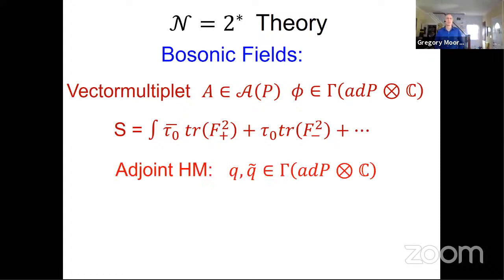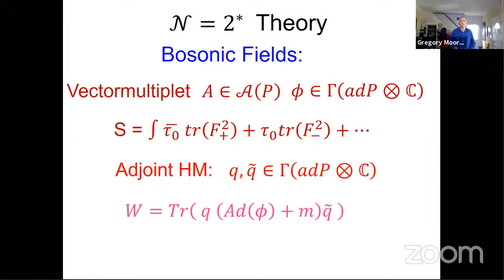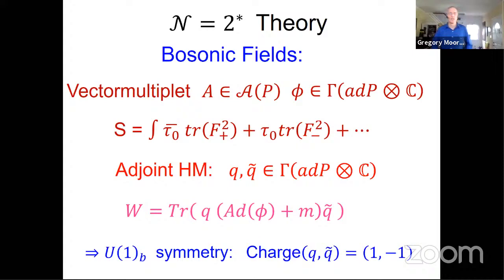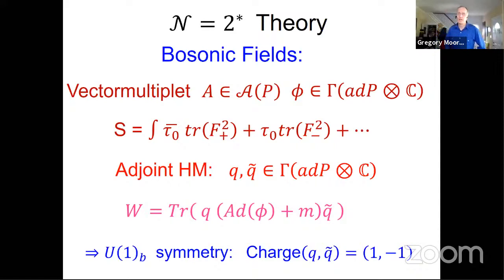The other bosonic fields are what's called the adjoint hypermultiplet — a pair of sections of the complexified adjoint bundle. The best way to write down their interaction is to use an N=1 supersymmetry formalism with a superpotential. The superpotential is quadratic in Q and Q-tilde, and an important consequence is that there's a U(1) symmetry where Q and Q-tilde scale with opposite phases — charges plus one and minus one. I'll call that U(1)_B symmetry. The mass M is an equivariant parameter for U(1) equivariant cohomology, and that indeed turns out to be the case.